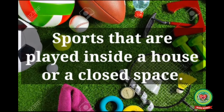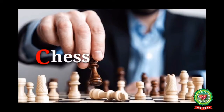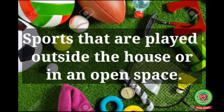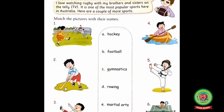Sports activities are of two types. Number one is indoor sports — sports that are played inside a house or a closed space, for example badminton and chess. Number two is outdoor sports — sports that are played outside the house or in an open space, for example golf and football. Now let's start with the chapter.